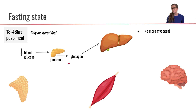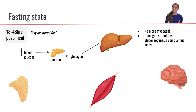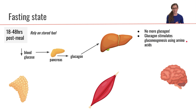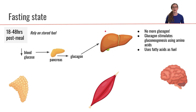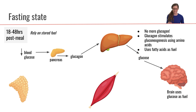Glucagon is going to stimulate the liver; however, the liver has no more glycogen left, so it can't perform glycogenolysis. Instead, glucagon is going to stimulate the liver to perform gluconeogenesis, allowing the liver to still send out some glucose into the bloodstream. In this case, the liver is using amino acids as its source for gluconeogenesis — specifically glucogenic amino acids, whose carbon skeletons can be reshuffled for gluconeogenesis. The liver is primarily relying on fatty acids as fuel during the fasting state, and through gluconeogenesis it brings blood glucose back up to homeostasis.